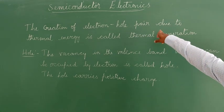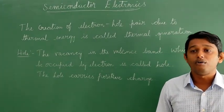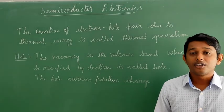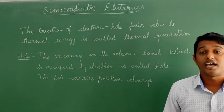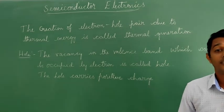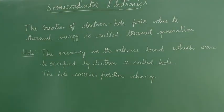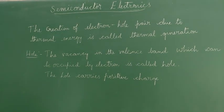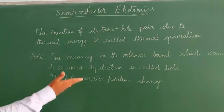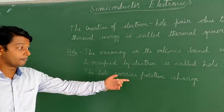The creation of an electron-hole pair due to thermal energy is called thermal generation. In thermal generation, the number of holes equals the number of free electrons. In semiconductors, both electrons and holes are charge carriers. The vacancy in the valence band which can be occupied by an electron is called a hole. The hole carries positive charge.